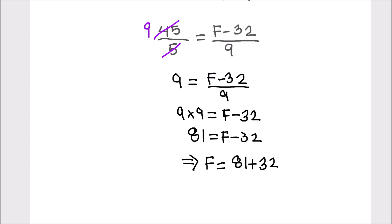And 81 plus 32 equals 113 degrees. So 45 degree centigrade is equal to 113 degree Fahrenheit.